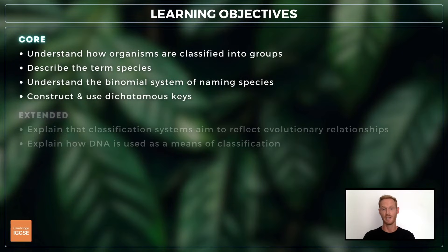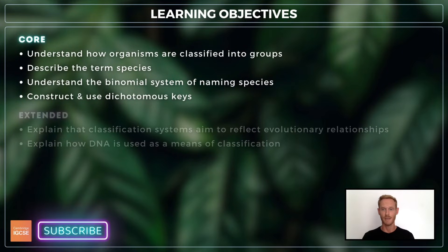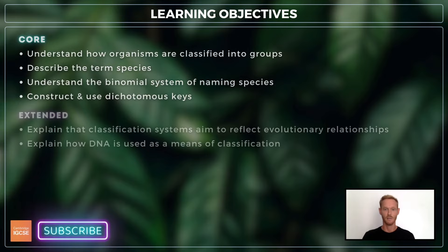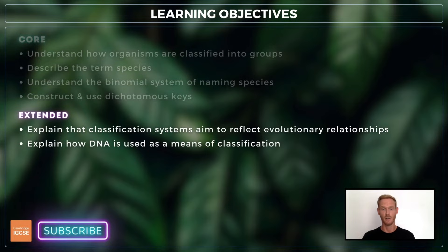For topic 1.2, you need to be able to understand how organisms are classified based on their physical features, describe the term species and the binomial system of naming species, and construct and use dichotomous keys. For the extended course, you also need to know that classification systems reflect evolutionary relationships, and how base sequences of DNA are used to classify organisms.